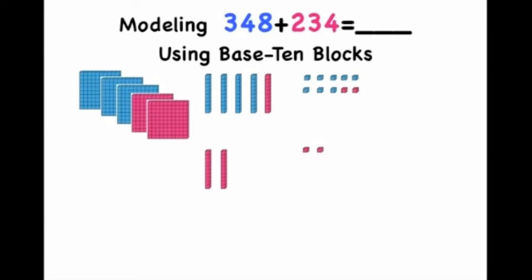So now that we have our blocks organized, this leaves us with five hundreds, seven tens, and twelve ones. We can't have twelve ones, so that means we need to do something different. What we need to do is called regrouping. This means that we need to regroup ten ones and trade them for one ten. So let's look at how this happens.